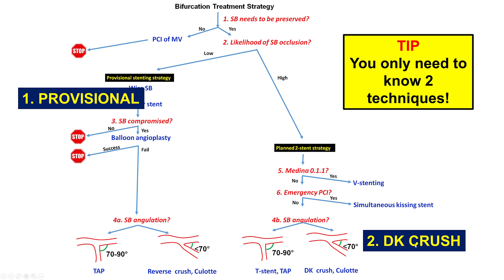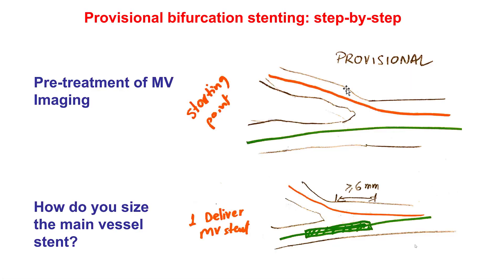DK crush has the best data regarding two-stent bifurcation stenting. The procedure starts by wiring both the main vessel as well as the side branch.